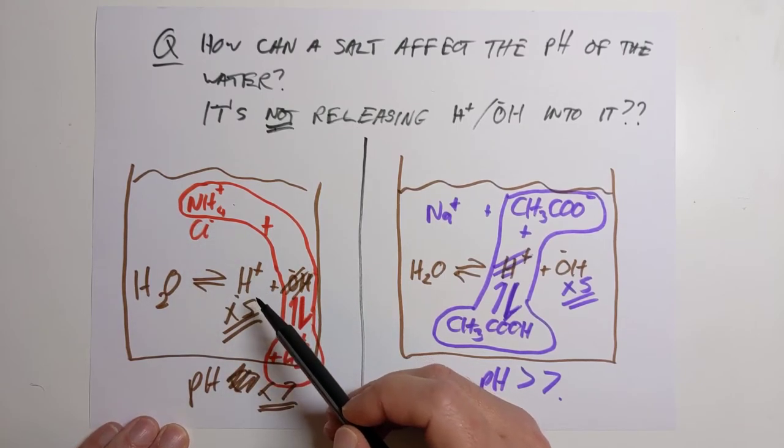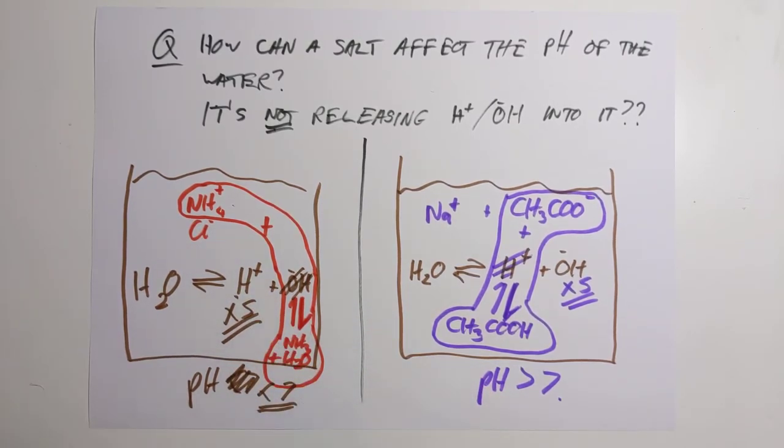It would be hydrochloric acid, which is also a strong acid. If anybody clever is wondering what happens if you have the salt of a weak base and a weak acid, then good for you. The answer, of course, depends on the relative strengths of these two.